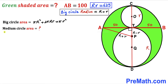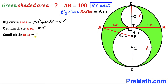The area of the medium circle with radius R is πR². The area of the small circle with radius r is πr².